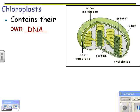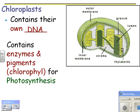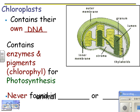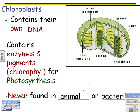Chloroplasts contain their own DNA, which makes them as cool as mitochondria. They contain enzymes and pigments — the big one being chlorophyll for photosynthesis. They are never found in animal cells, bacteria, or fungi, unless there's a symbiotic relationship. For example, lichen is a symbiotic relationship between fungi and algae — the algae would have chloroplasts in them, but the fungi itself wouldn't.